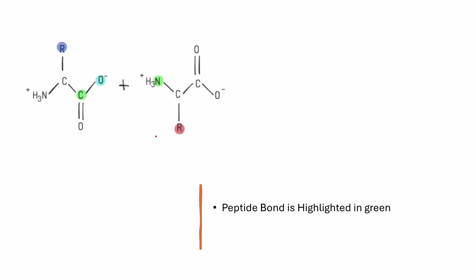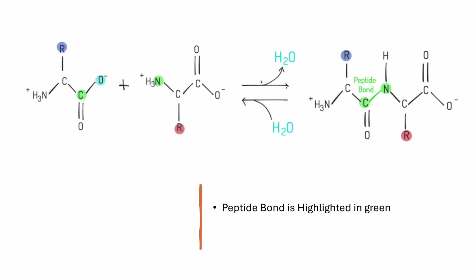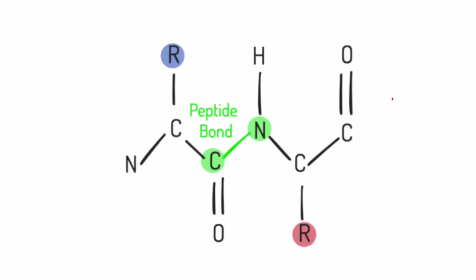When forming a peptide bond, a water molecule is ejected out and a peptide bond is formed between nitrogen and carbon, highlighted in green. Nitrogen has a lone pair of electrons which forms a double bond — you can see another bond between nitrogen and carbon. Since carbon can only form four bonds, this bond goes back to oxygen.